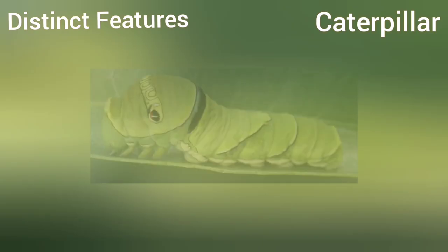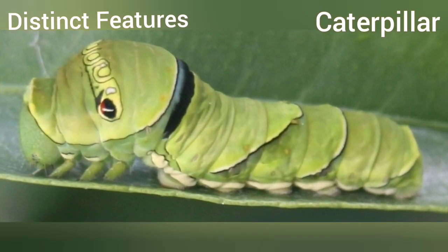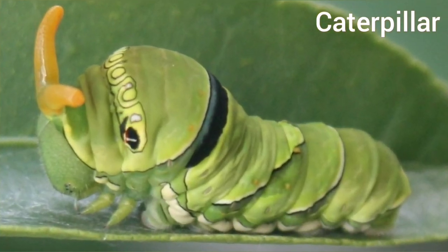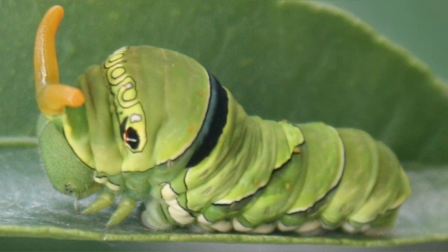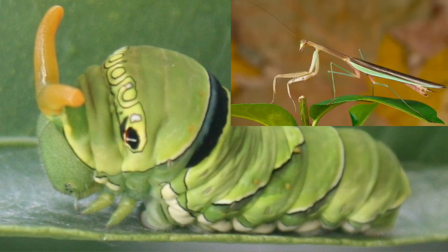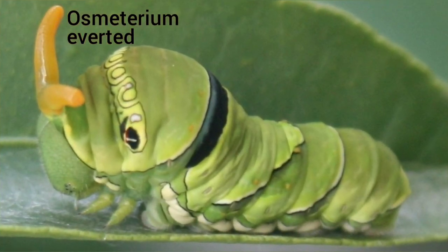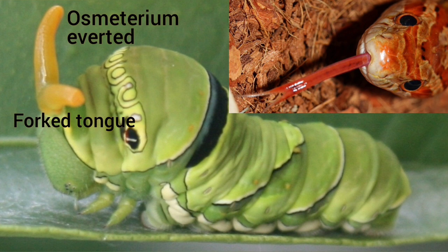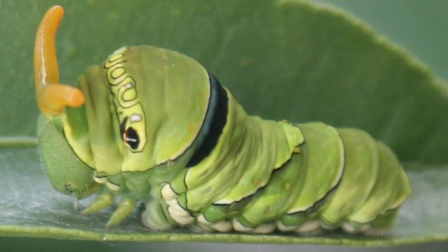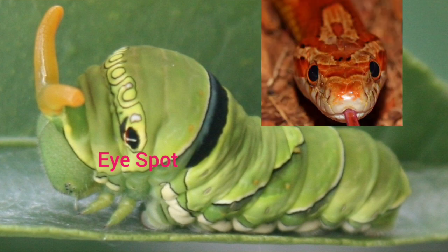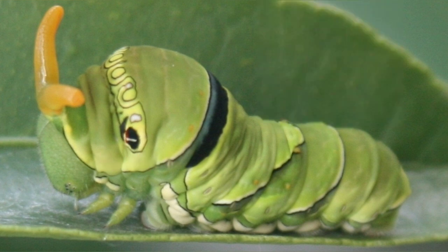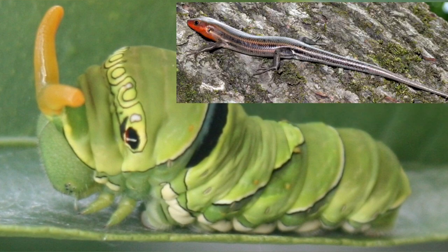Normally the osmeterium remains hidden, but when threatened, the larva turns it outward and emits a foul odor that repels ants, small spiders, and mantids. The everted organ looks like a forked tongue, something like a snake tongue. Also, it has large eye-like spots that resemble the head of a snake, used to keep away birds and small reptiles.